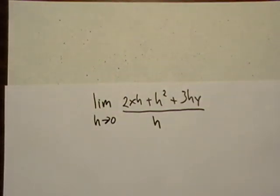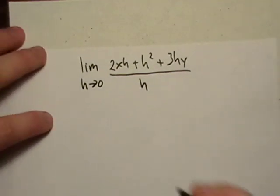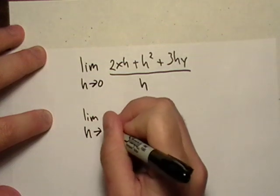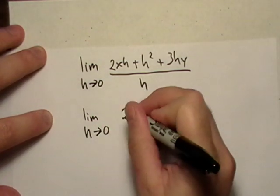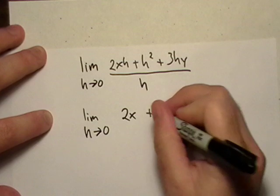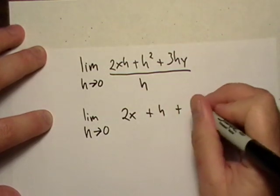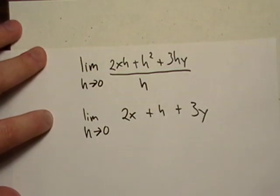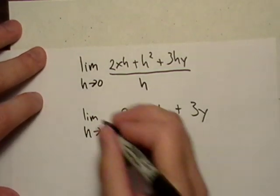So here we are. And this is just going to equal the limit as h goes to zero of 2x plus h plus 3y. Remember, we just divide h out. And if we take that limit, it looks like we just end up with 2x plus 3y.